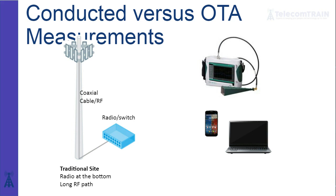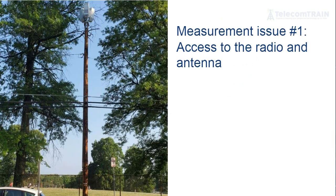Measurement issue number one: access to the radio and the antenna. We won't have any more access to the RF path. In this talk we're going to discuss beamforming, MIMO, and massive MIMO — what is happening in the transmitter, receiver, and RF path to make those things happen. If you have a good understanding of those technologies, you'll understand why it's impossible to have access to that RF path and how they'll behave in the environment, allowing you to make your own decisions about measurement challenges.